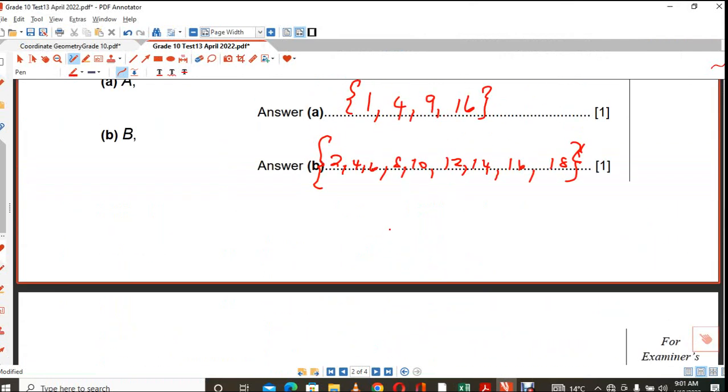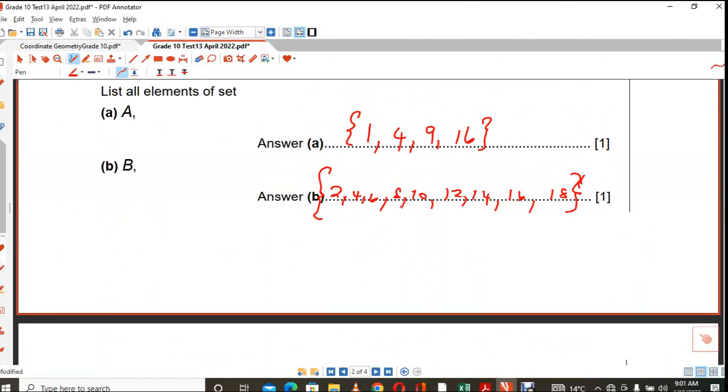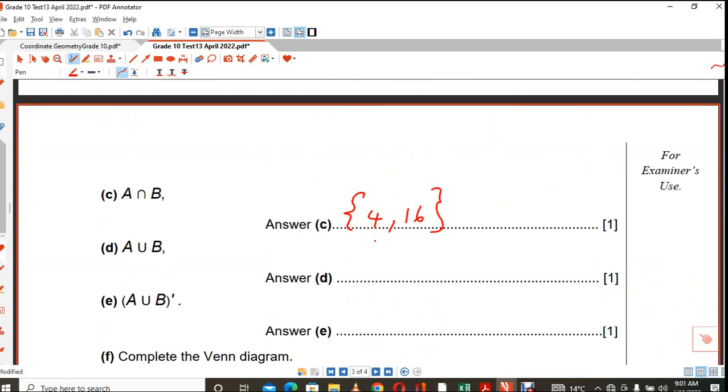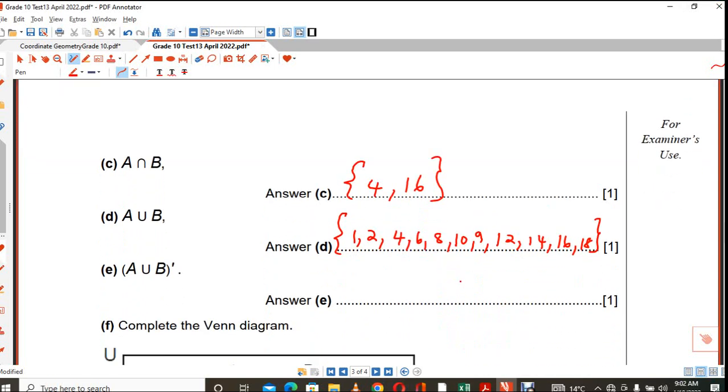The union of A and B means everything in A and B must be written. But you are not going to write like 4 twice. And you won't write 16 twice. Are we together? So let's see if you can do it. It's 1. 9 also. 10, 12, 14, 16, and 18. What is not in that union? What is not there? Now you go back to your universal set. You compare your answer there. What is not there? 3, 5, 7, 11.